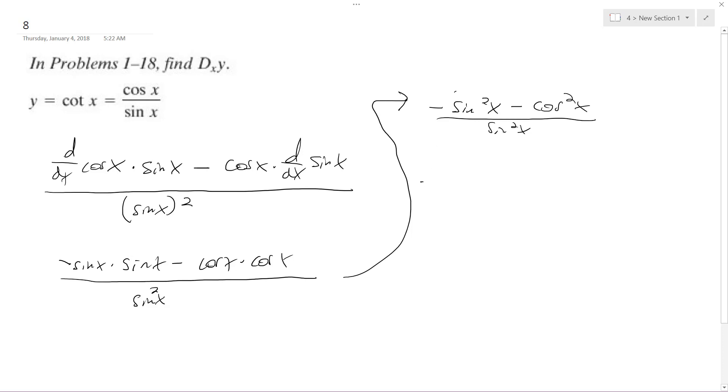What I can do here is factor out negative 1, so I get sine squared of x plus cosine squared of x all over sine squared of x, and this is equal to 1.